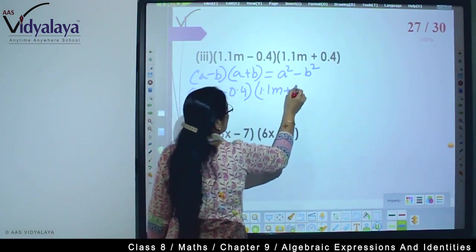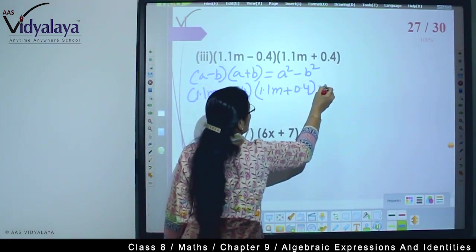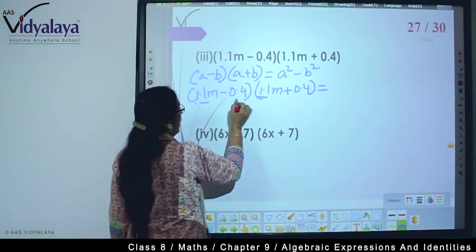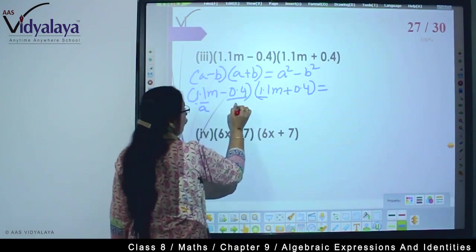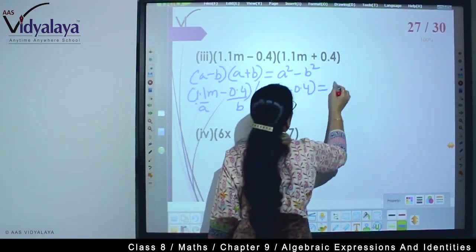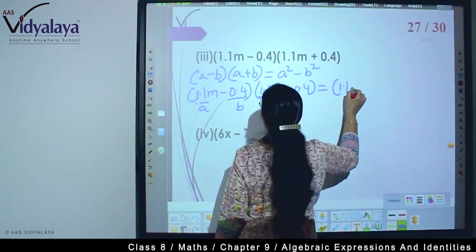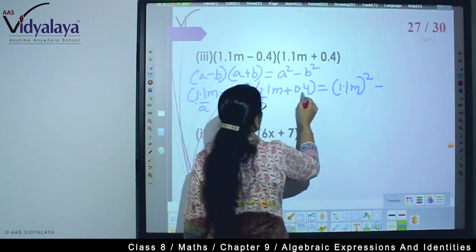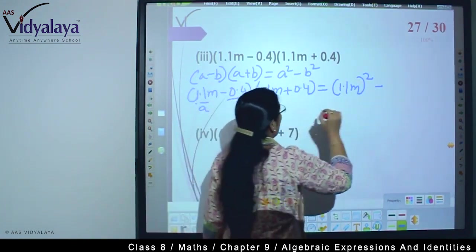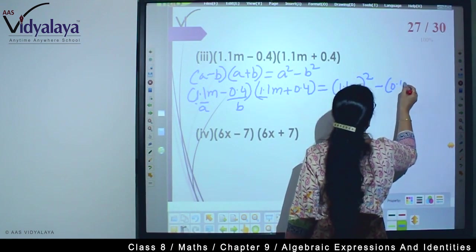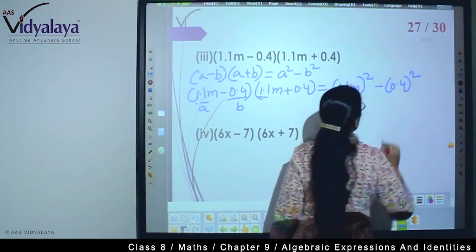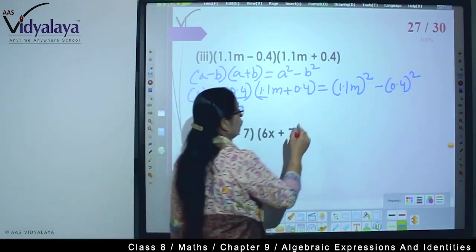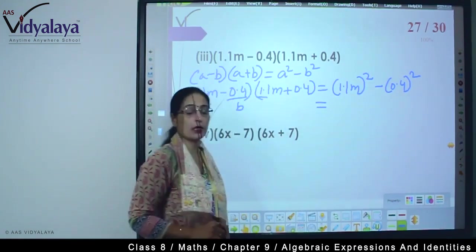This is equal to... now what happened? Here 1.1m is a and 0.4 is b. So we get (1.1m)² - (0.4)².